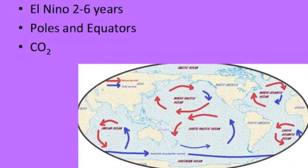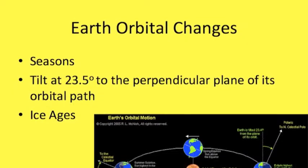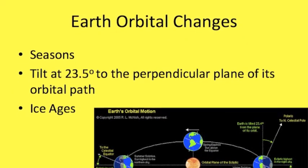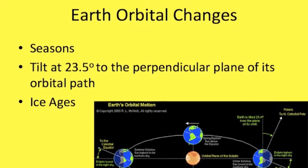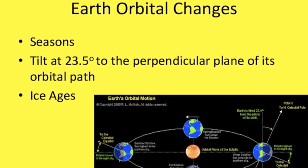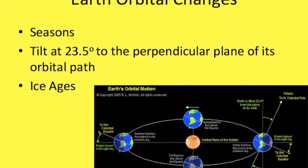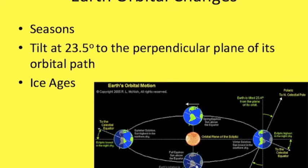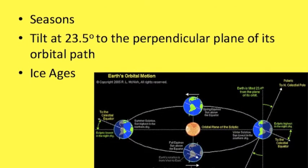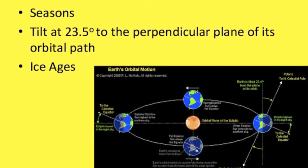Our next slide is Earth's orbital change. During the Northern Hemisphere summer, the Earth is further away, causing less solar radiation. The Earth's tilt isn't always at 23.5 degrees during the average climate years. Earth's orbital change can cause positive feedback, which produces ice ages.